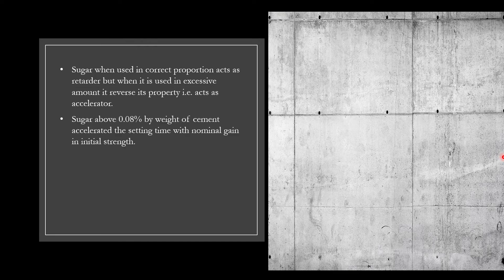In research it is found that sugar above 0.08% by weight of cement accelerated the setting time with nominal gain in initial strength. Excessive volume expansion was noted in the samples as cracks were formed in the sample itself.